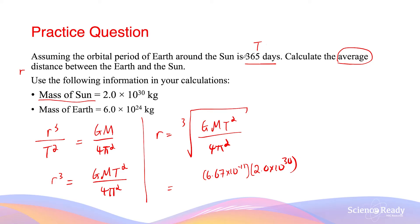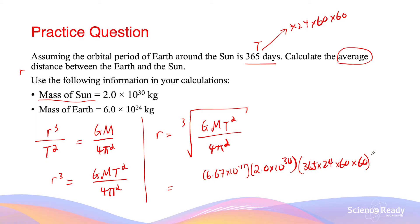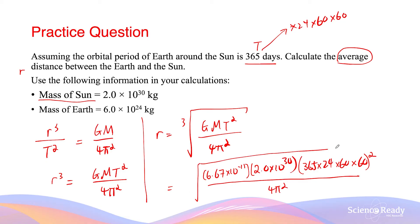The period is 365 days, which we convert to seconds by multiplying by 24, by 60, and by 60 again — giving 365 × 24 × 60 × 60 seconds. Don't forget to square this value for T². This is all divided by 4π², and we take the cube root of everything to get r. Substituting G = 6.67 × 10⁻¹¹ and the mass of the Sun gives us an answer of 1.50 × 10¹¹ meters.